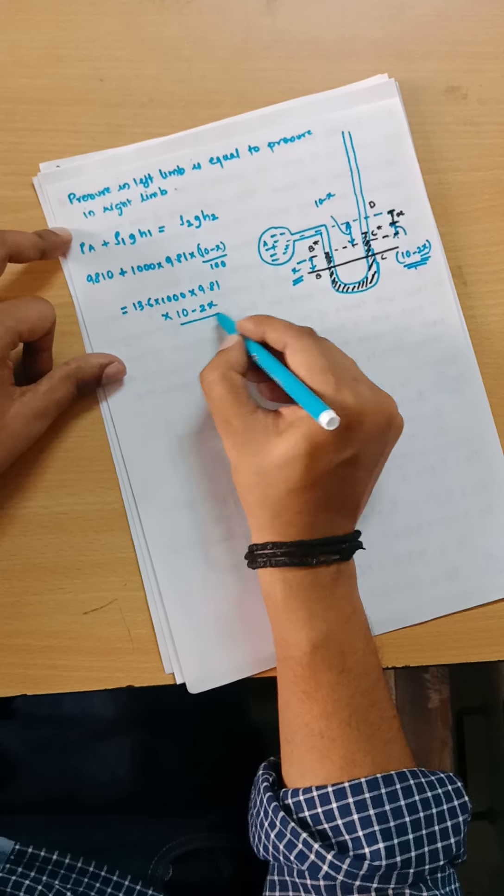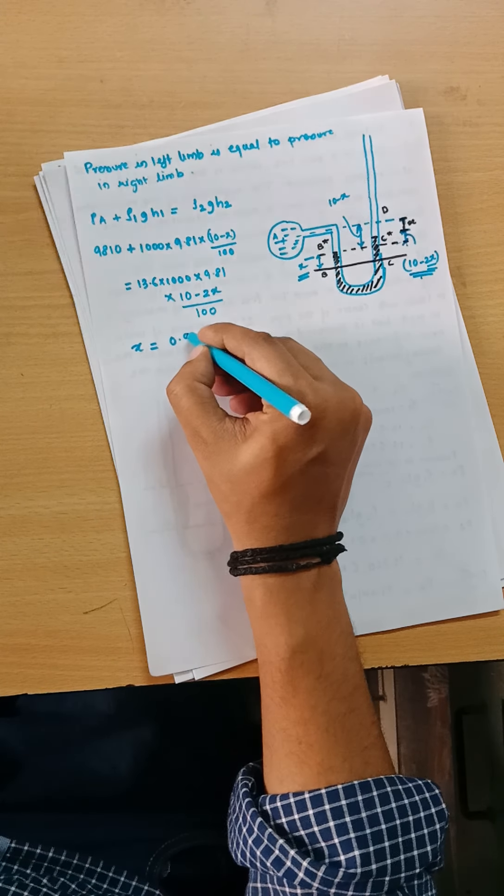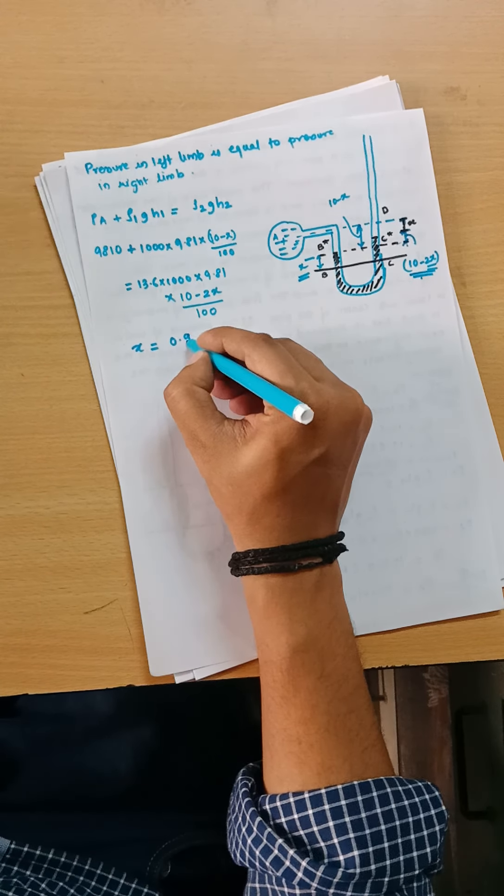The value is coming out to be 10 minus 2X. This will be 10 minus 2X. Again, this is in centimeters, so we need to divide it by 100.